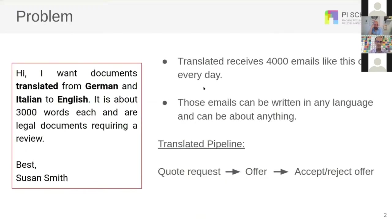Translated receives about 4,000 emails like the one you see on the left here. Those emails can be written in any language and can really be about anything. Here on the left side you can see an email that's actually a quote request — that's what Translated is interested about. Usually it's not only those emails; they can really be any type of email, and that's why you need to filter them.